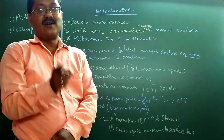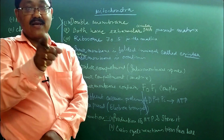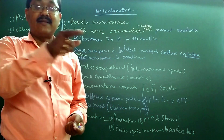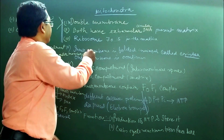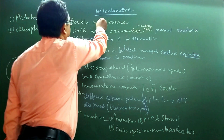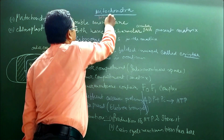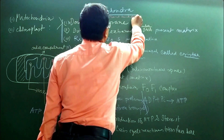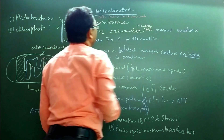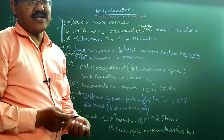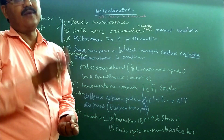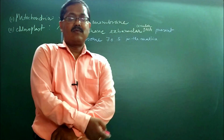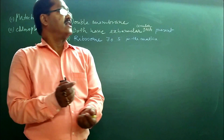The second organelle present in cells is called the chloroplast. Mitochondria are present in both plant cells and animal cells.